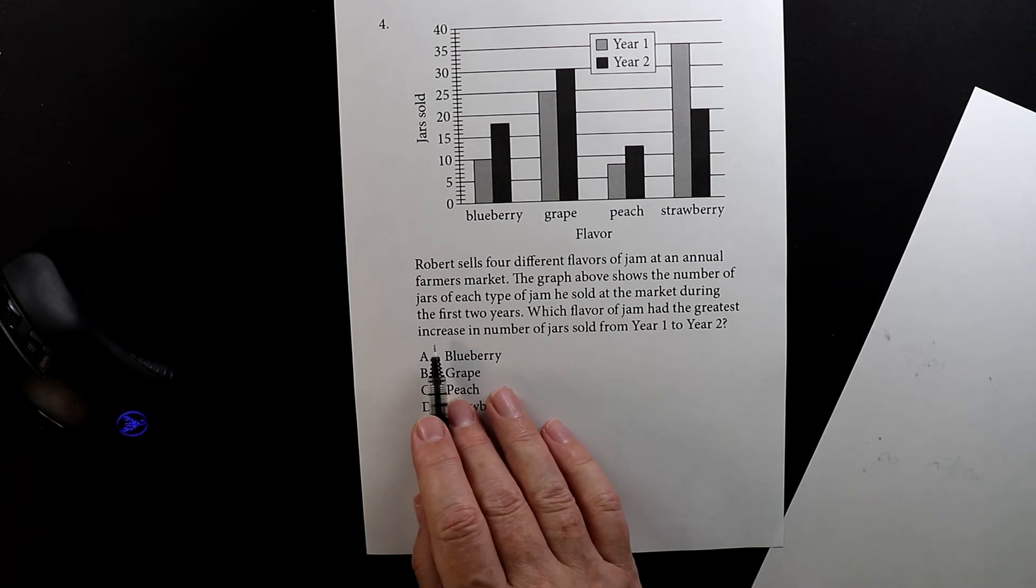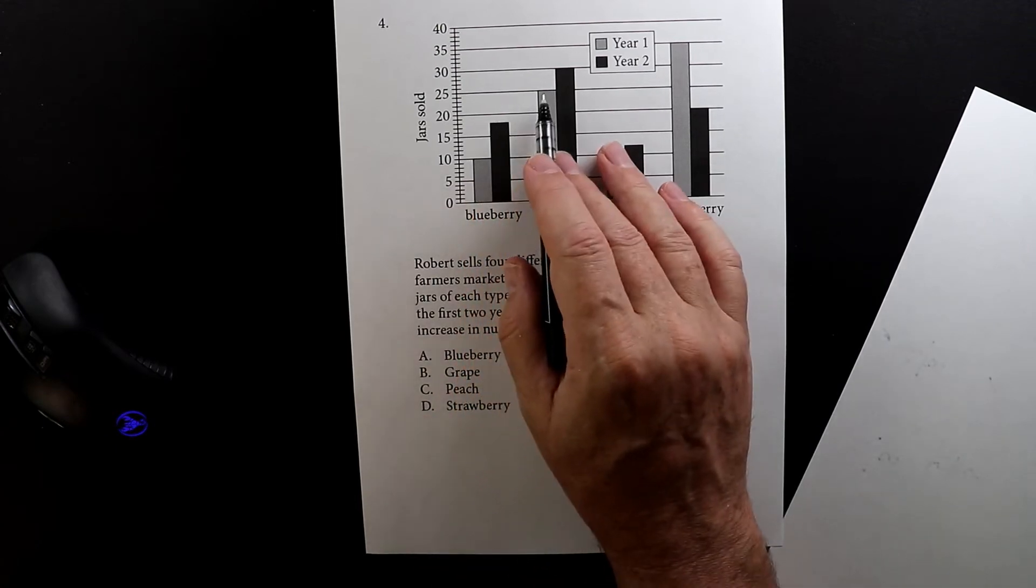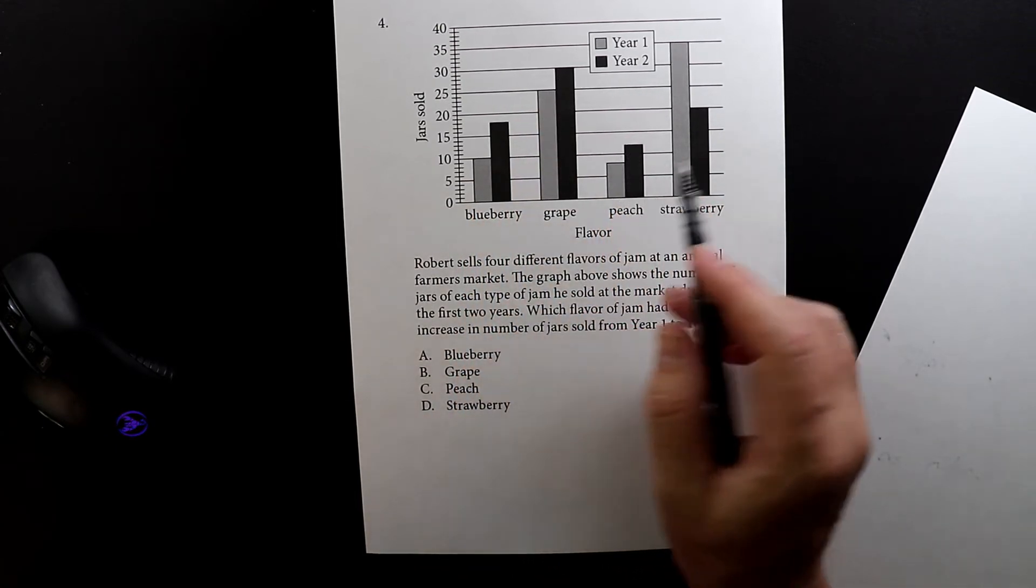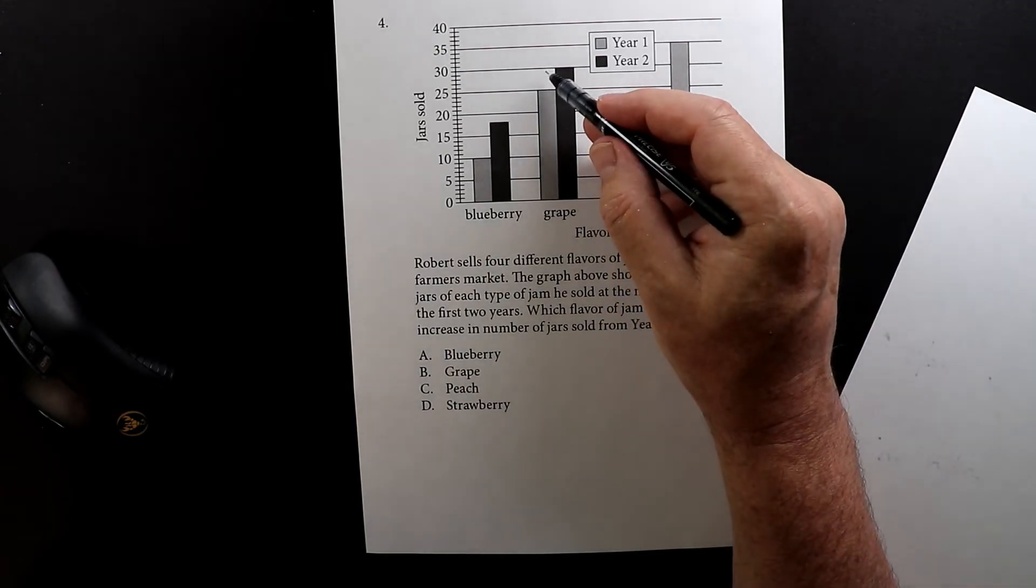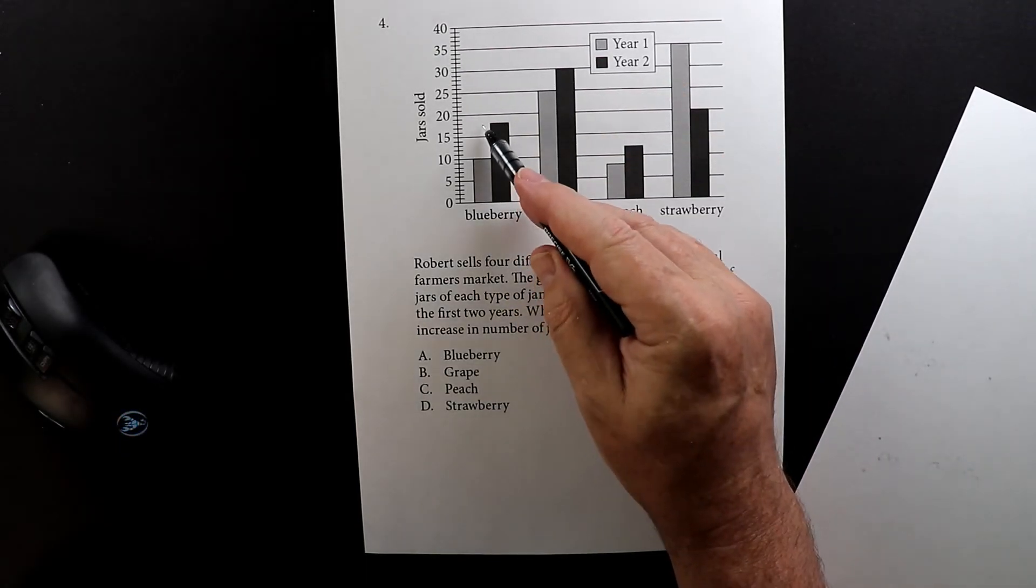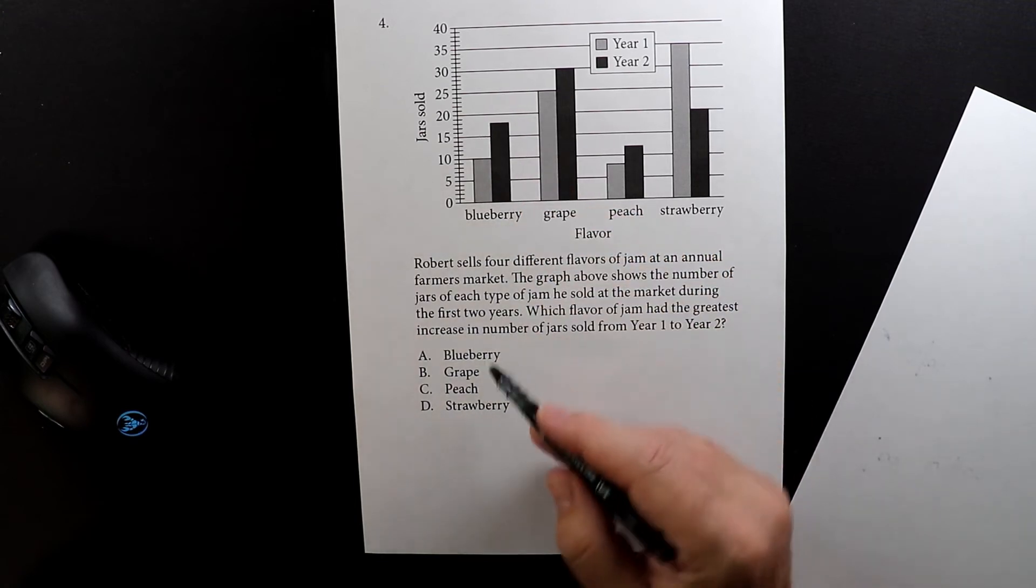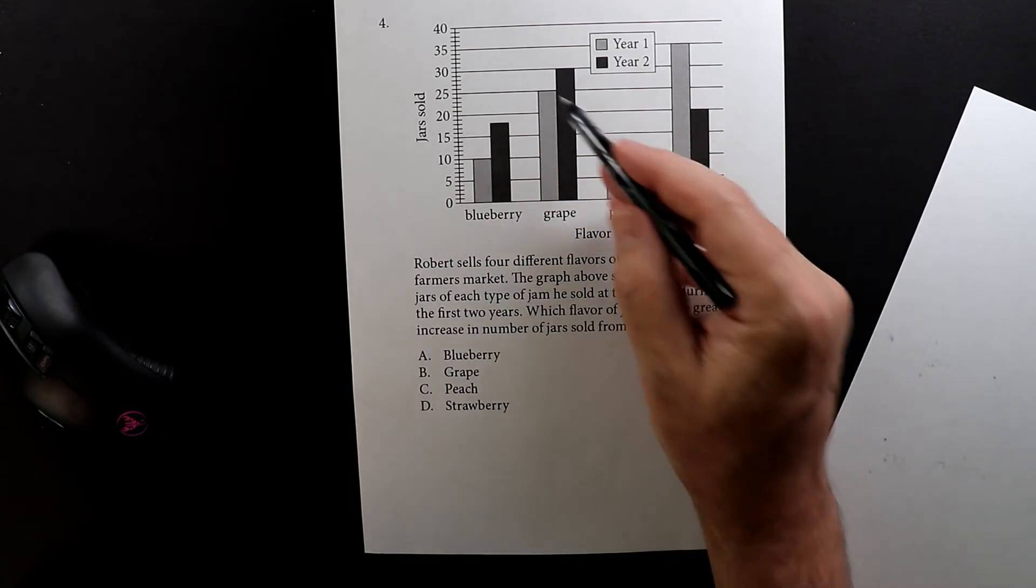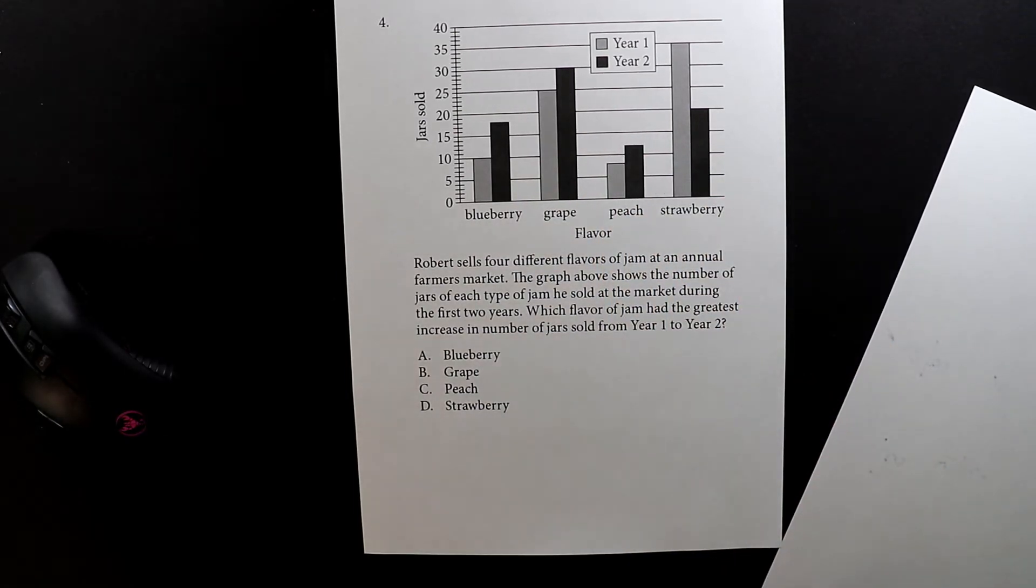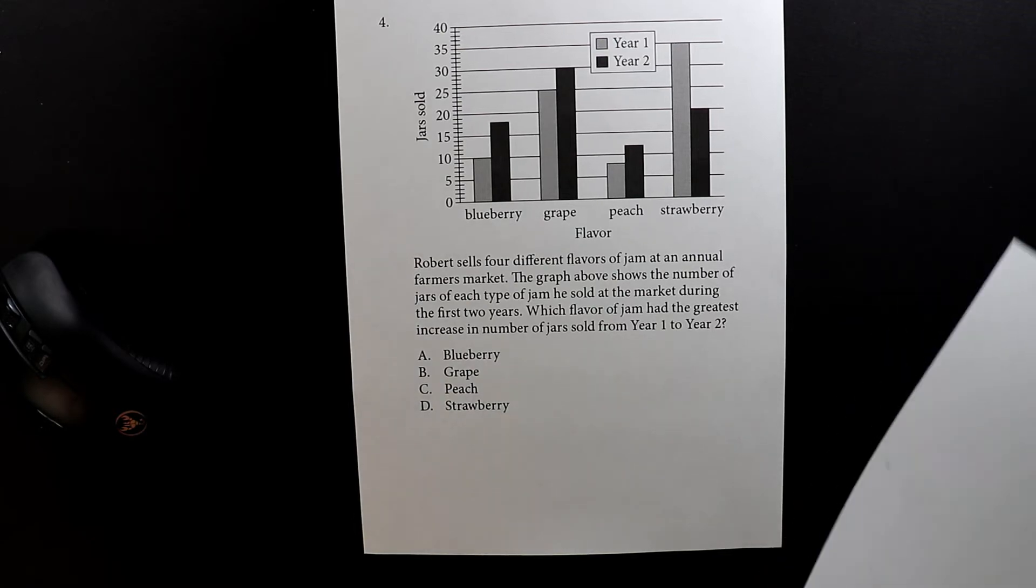So here it went up, went up, and went up. Now visually what you do is you look to see which of these gaps is the largest. So I can see right away that this is the biggest gap so I know it's blueberry. But if it wasn't so noticeable, like these two are kind of similar, you can just do the subtraction to see which of them is the correct answer. So let's do that real quick.